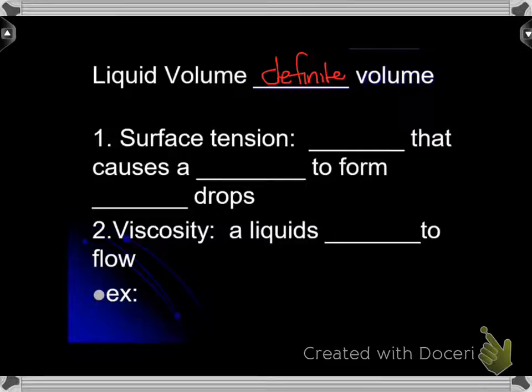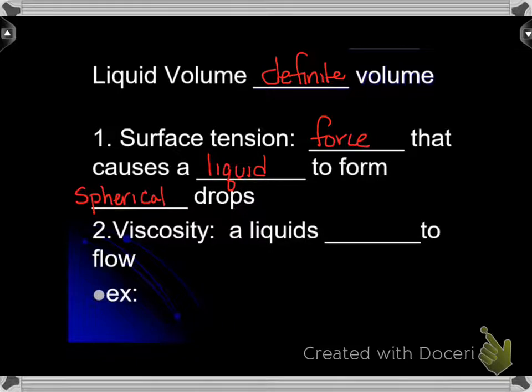Liquid volume has definite volume. You know how to measure it - we pour it in a graduated cylinder and see how many milliliters there are. Liquid also has surface tension, and that is a force that causes a liquid to form spherical drops. It's one of the reasons why we look at the meniscus when you're measuring a graduated cylinder, because the water clings to the side. We also talk about viscosity. Viscosity is a liquid's resistance to flow.